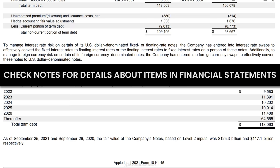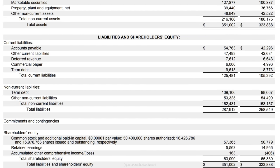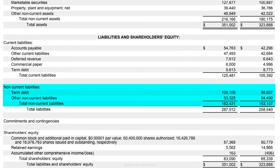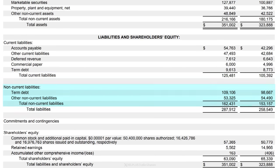You can find a lot of details in these accompanying notes — just use the search tool to get more information about positions in the financial statements. Going back to the balance sheet: in total, that's $125 billion worth of current liabilities. Then non-current liabilities, which is the long-term debt — the biggest item there is term debt, which we just looked at in the notes. Adding current and non-current results in total liabilities of about $288 billion.